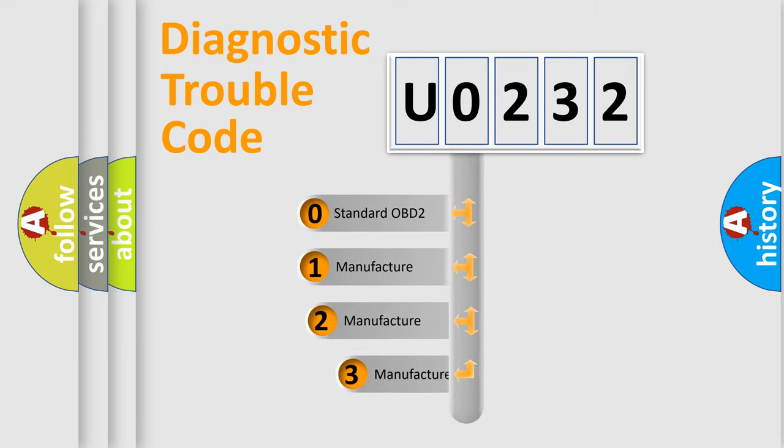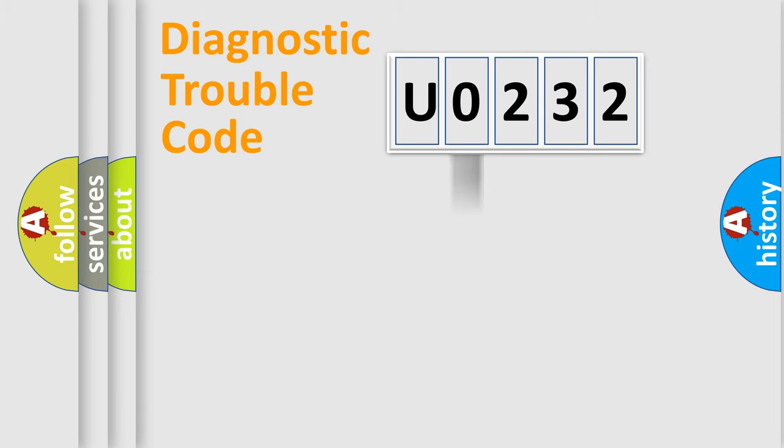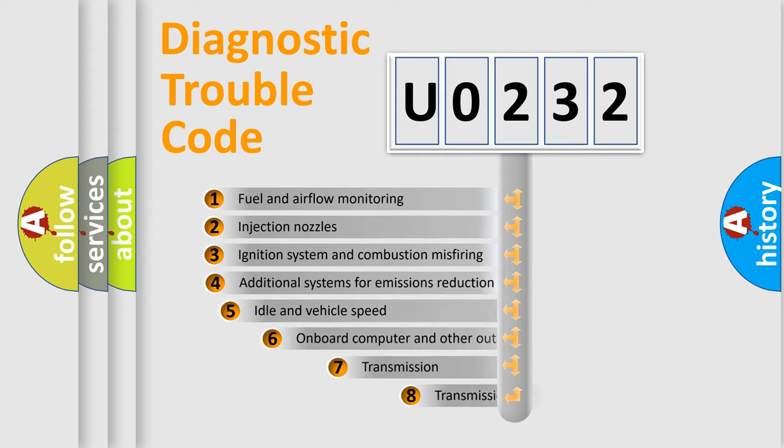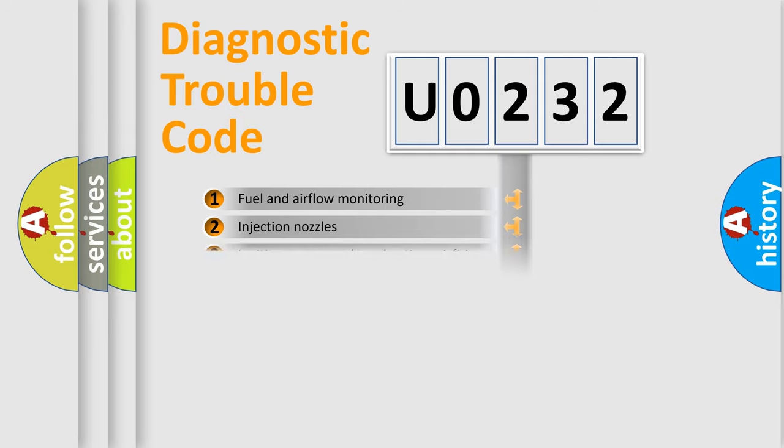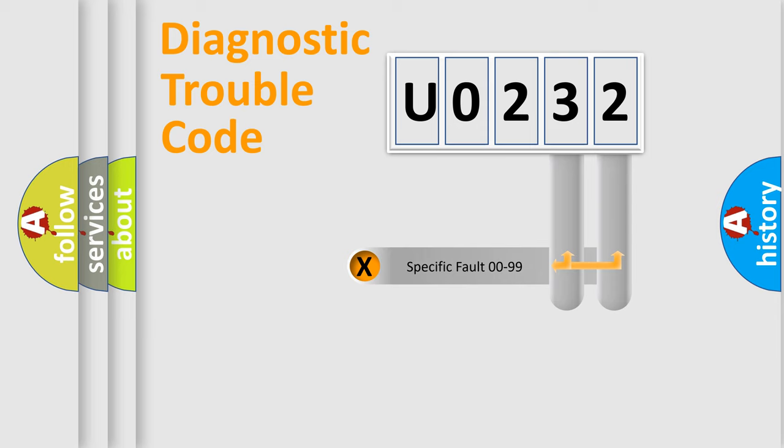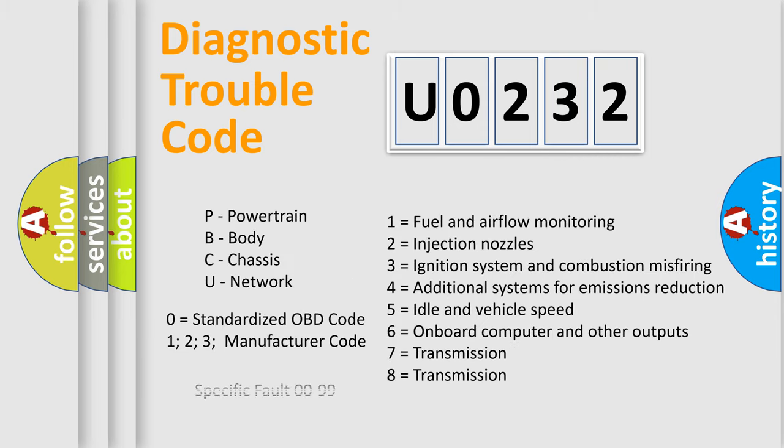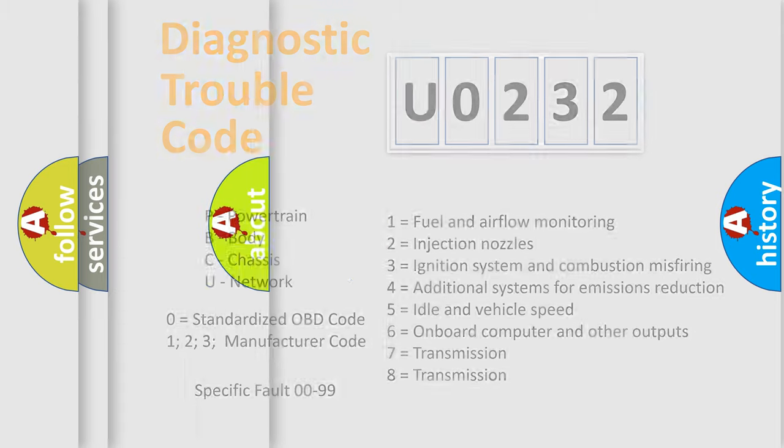If the second character is expressed as 0, it is a standardized error. In the case of numbers 1, 2, or 3, it is a manufacturer-specific expression of the car-specific error. The third character specifies a subset of errors. The distribution shown is valid only for the standardized DTC code. Only the last two characters define the specific fault of the group. Let's not forget that such a division is valid only if the second character code is expressed by the number 0.